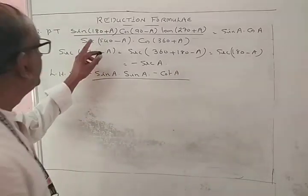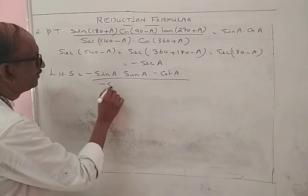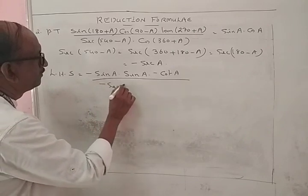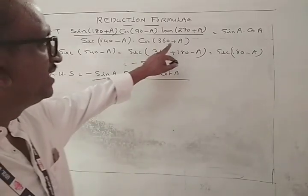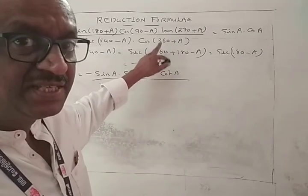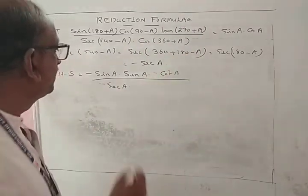sec(540 - A) = minus sec A, and cos(360 + A) = cos A, since 360 equals 0.